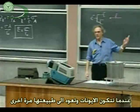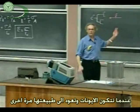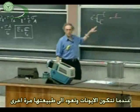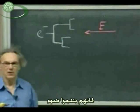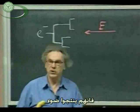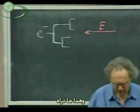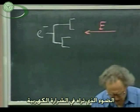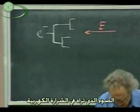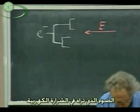When the ions that are formed become neutral again, they produce light. And that's the light that you see in the spark.